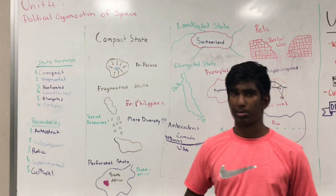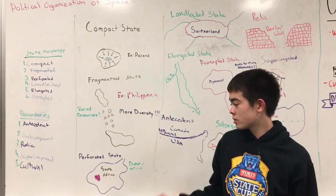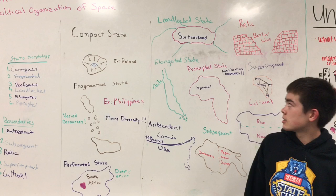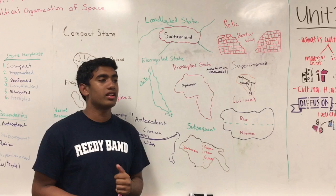I'm Carter, and we're going to continue with the state morphology. A perforated state is a state that has another state inside of it — the state on the outside usually has a lot more control over the state on the inside. A landlocked state is a state that has no ocean around it, like Switzerland, where they would have to ask another country to use their ports for ocean travel, so they have a big disadvantage. The elongated state is basically just a really long state — Chile is a great example.